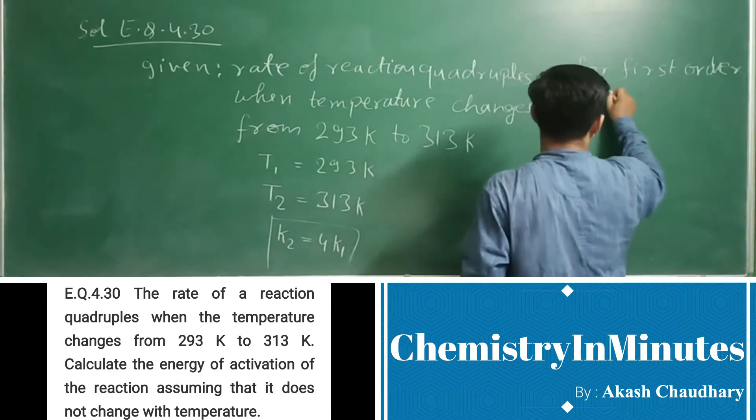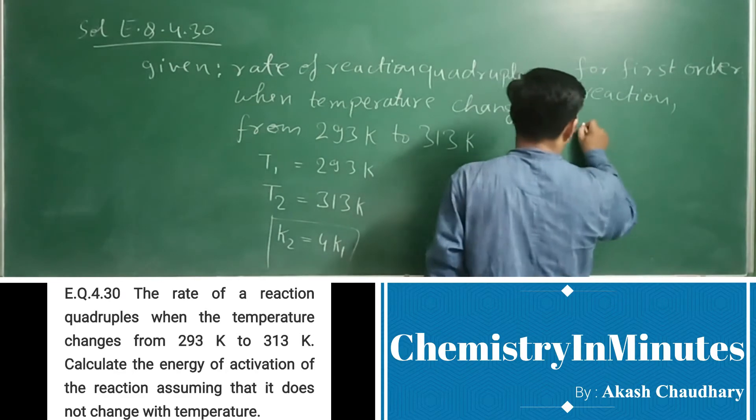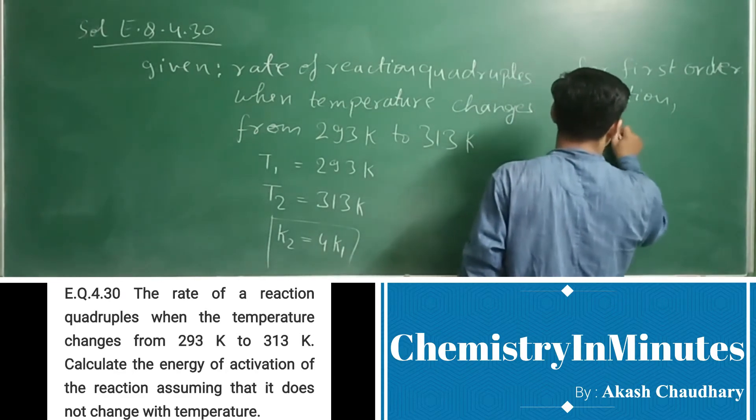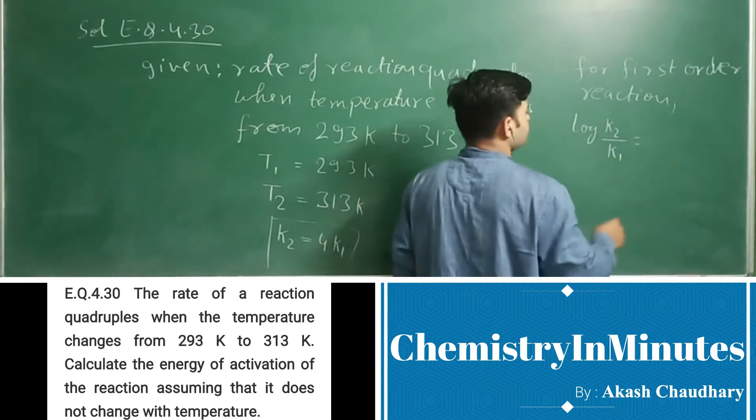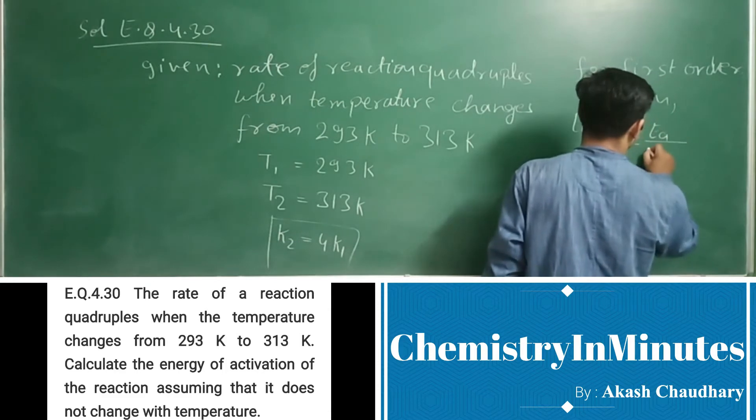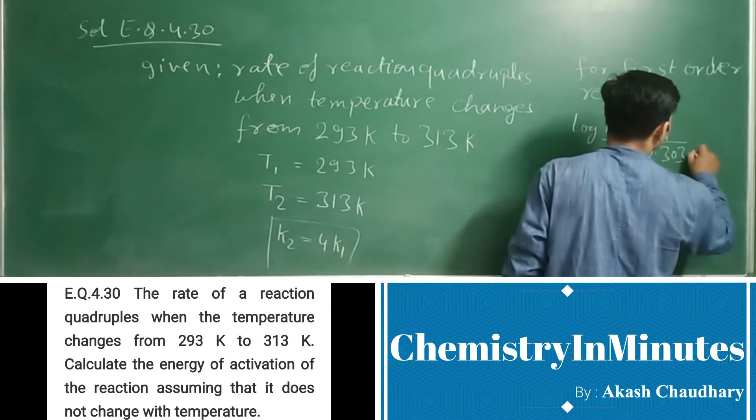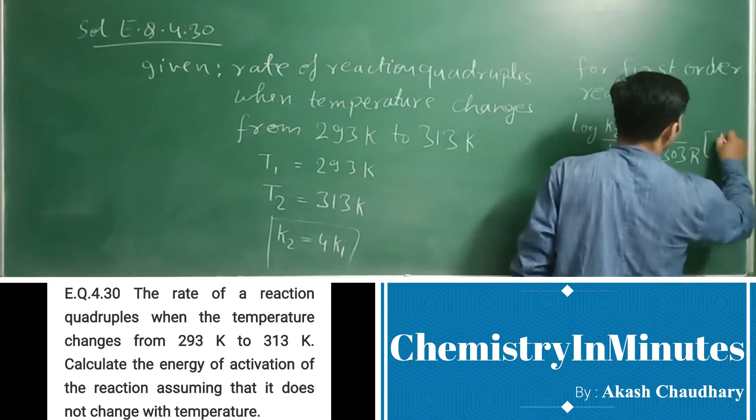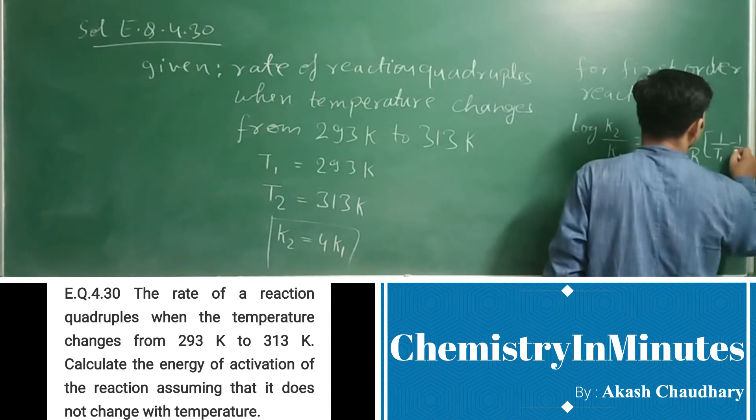for first order reaction, log K2 upon K1 equals Ea upon 2.303R times (1 upon T1 minus 1 upon T2).